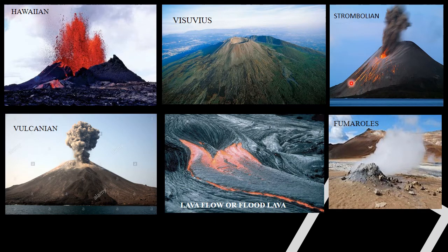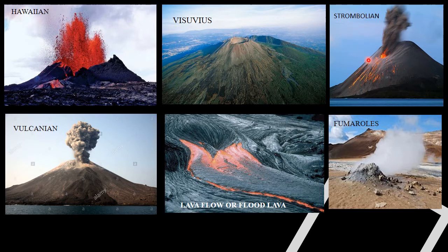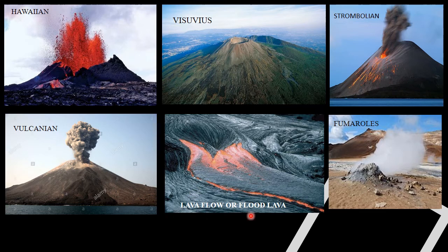Images of volcano types are shown: Hawaiian type shows little explosion; Vesuvius type gives a sharp mouth or crater; Strombolian type gives a cauliflower structure of dust or gas cloud; Vulcanian type also gives a cauliflower structure and is more violent than Strombolian. Another image shows lava flows or flood lava, and one image shows fumaroles, which will be discussed in the next slide.